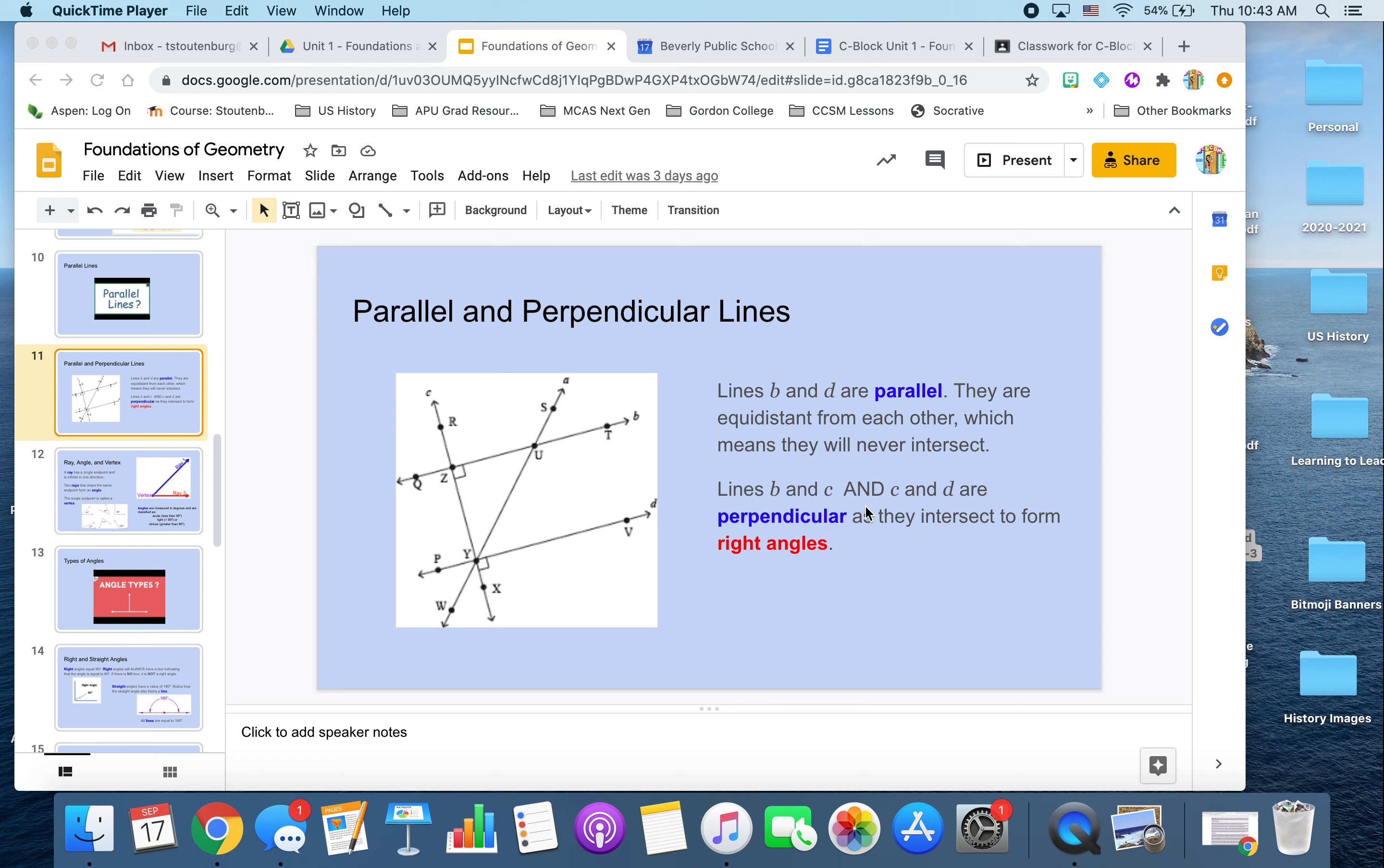Now, perpendicular lines are lines that intersect to form right angles. The symbol for a right angle is this little box here in the corner. So you notice how line C intersects with line B to form that right angle. That means line C and line B are perpendicular to each other.